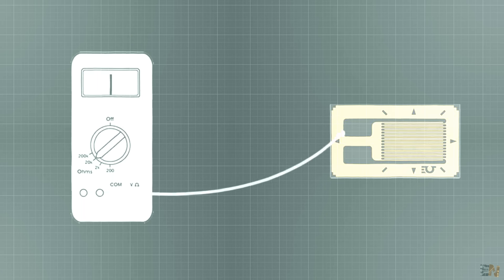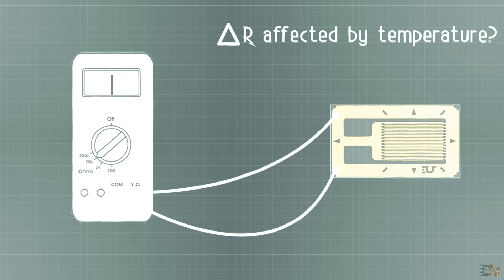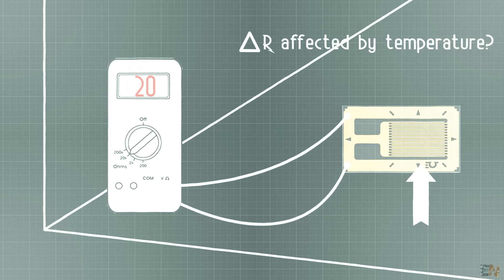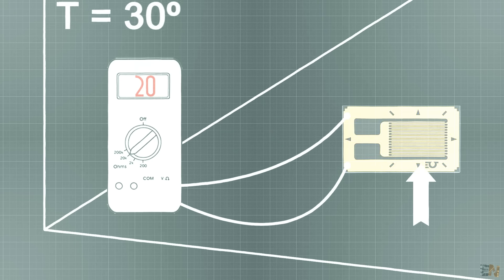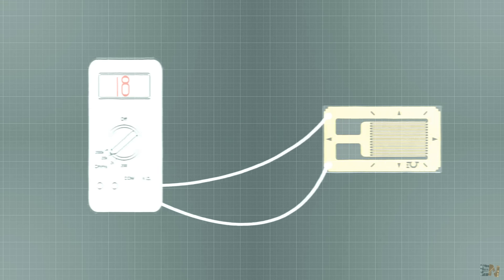But now you might wonder, why not use the gauge directly with the voltage divider? Well, this kind of sensors might change the resistance by other factors as well, as for example by the temperature. Let's say that we apply force on the gauge and we measure a resistance of 20 ohms in a room of 30 degrees. Then we apply the same force but in a room of 50 degrees and now we get 18 ohms. So that means that the gauge read is not reliable because it will change with the temperature as well and we don't want that.